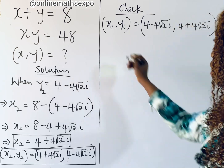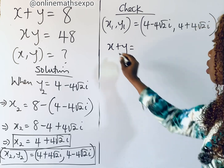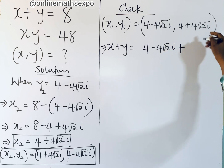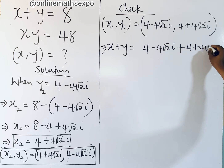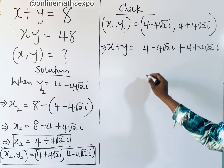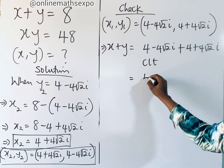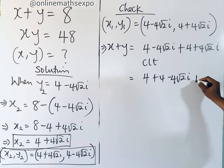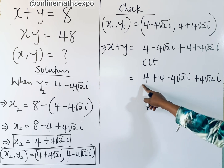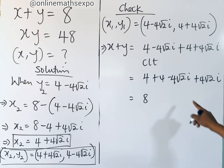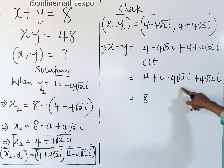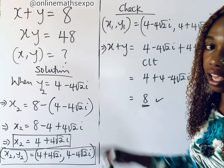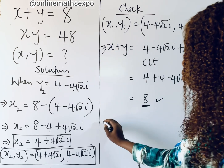Adding: x plus y equals (4 minus 4 root 2 i) plus (4 plus 4 root 2 i). Collecting like terms: 4 plus 4 equals 8, and negative 4 root 2 i plus 4 root 2 i equals 0. So x plus y equals 8, which matches the right side of equation one.